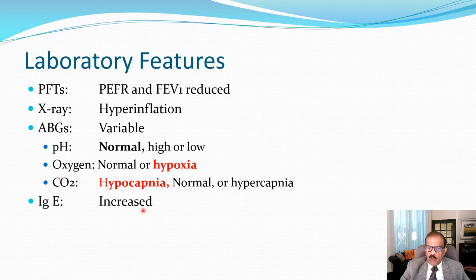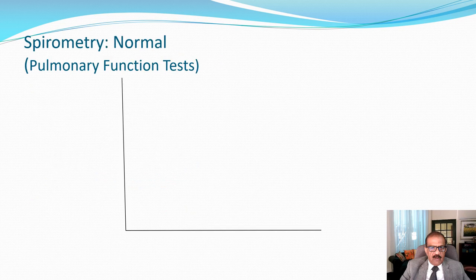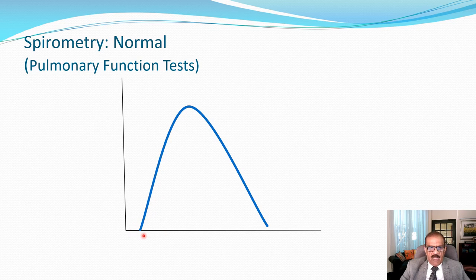In allergic or atopic asthma, IgE levels are elevated. This non-specific IgE level increase has a wide range, but we expect it to be raised. Allergen-specific IgE testing is also possible in some cases and can help identify the actual precipitating allergen. Regarding pulmonary function tests and spirometry, the patient is asked to breathe in and out of a device — usually with a nose clip so they breathe only through the mouth.